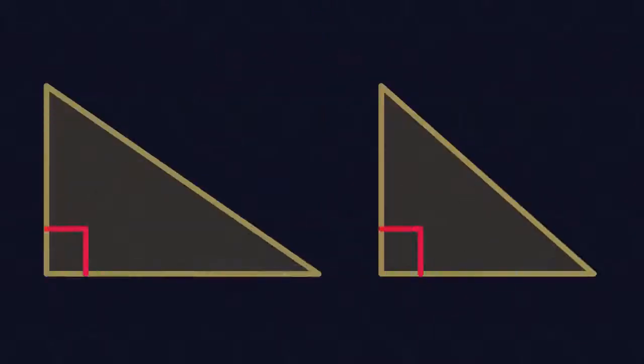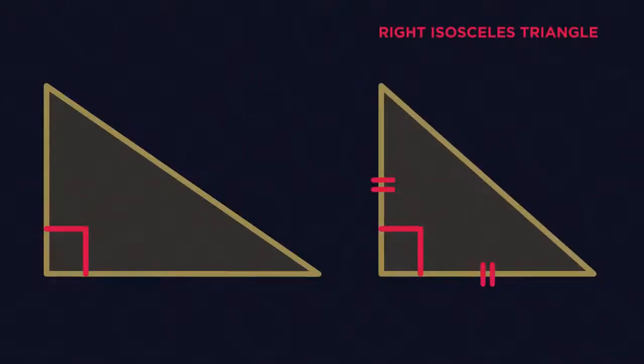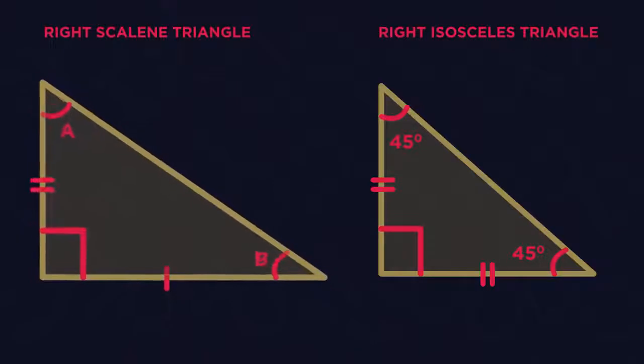Did you realize that a right-angled triangle can actually be an isosceles triangle if it has two equal sides and angles? Or it can be a scalene if everything is different?